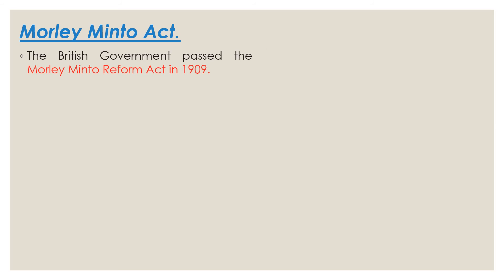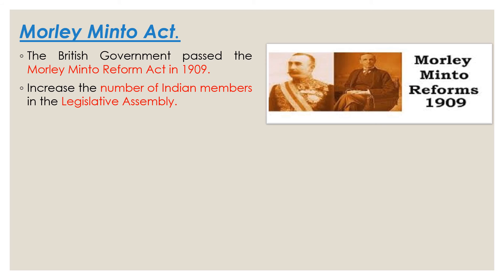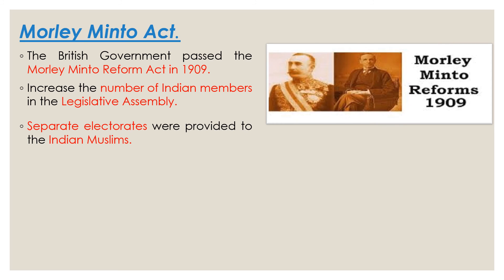Students, let us know about the Morley-Minto Act. Looking at the dissatisfaction among the Indians, the British government passed the Morley-Minto Reform Act in 1909. According to this Act, the British promised to increase the number of Indian members in the Legislative Assembly and were ready to include some elected Indian representatives in the Legislative Assembly. In the same Act, separate electorates were provided to the Indian Muslims, thus sowing the seeds of separatist tendencies in India.